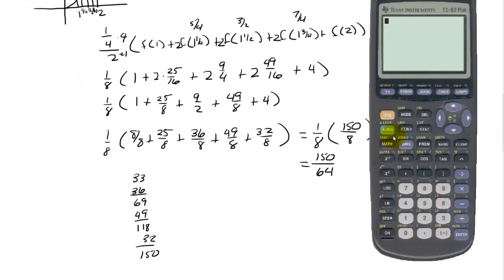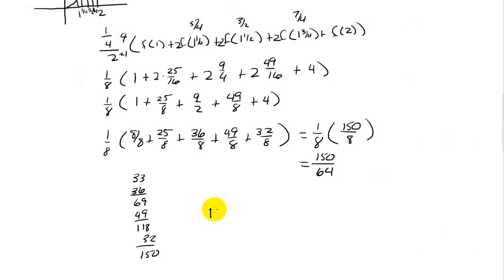Now let's compare that to the actual answer. We're going to use our calculator here. I want math number 9, fn int, this is x squared, comma x, and we're going from 1 to 2, which is 2 and a third. If we take 150 divided by 64, there's the approximation. So this is really an overestimate. So the answer is 150 over 64, and it is an overestimate.